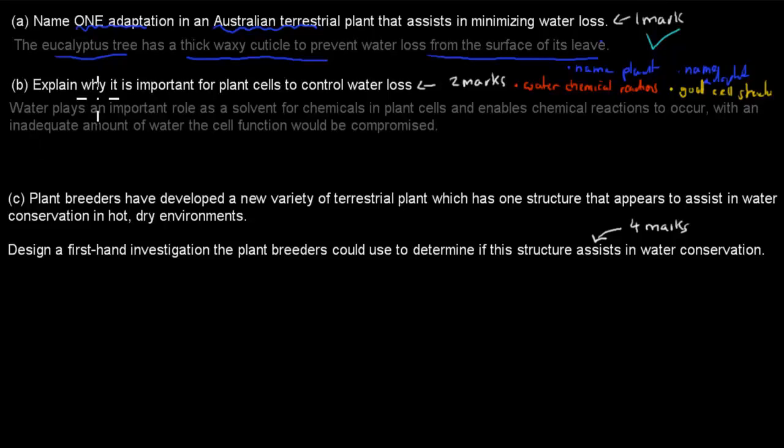So what I wrote is, water plays an important role as a solvent for chemical reactions in plant cells. This is the role it plays when it comes to chemical reactions in plant cells, and this enables chemical reactions to occur. So without water, chemical reactions wouldn't occur. So if we have an inadequate amount of water, the cell function would be compromised. So if we don't have enough, then obviously the cell itself wouldn't work properly anymore. So that's one reason why we need to make sure we have a normal constant level of water in our cells, to make sure our chemical reactions can go ahead at a normal pace.